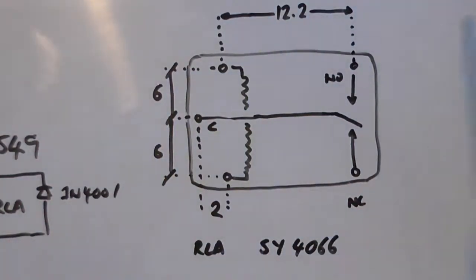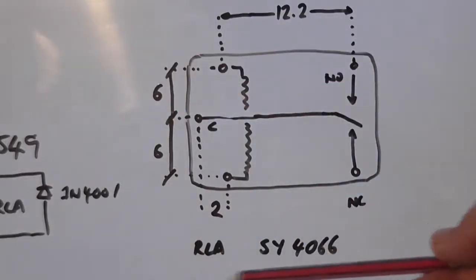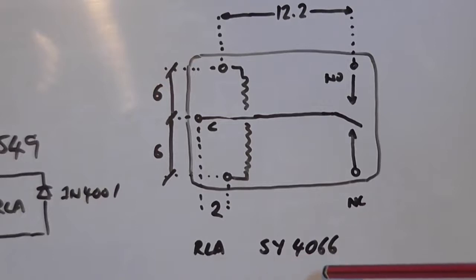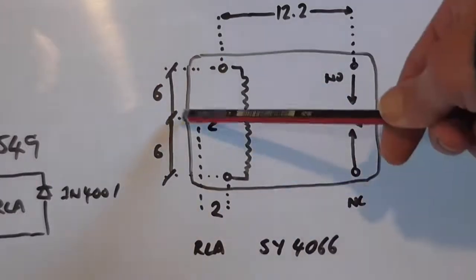Now, that's the technical diagram of the relay footprint as looking at it from the bottom. It gives me the measurements. It's Jcar SY4066, by the way. You've got the normally open, normally closed, the relay coil across here, and the center in the middle.